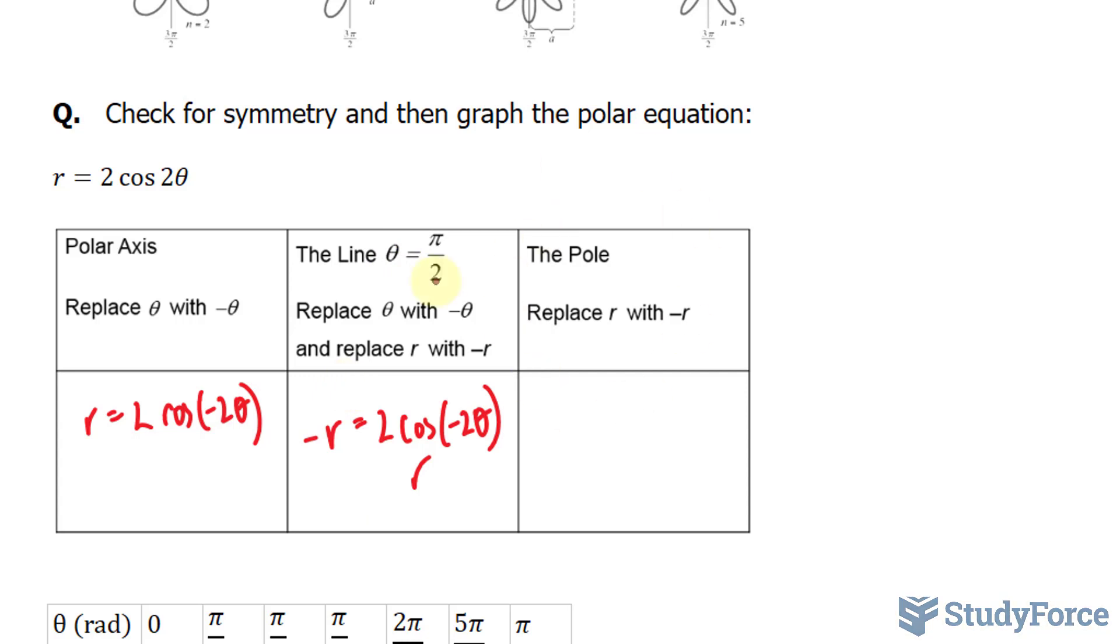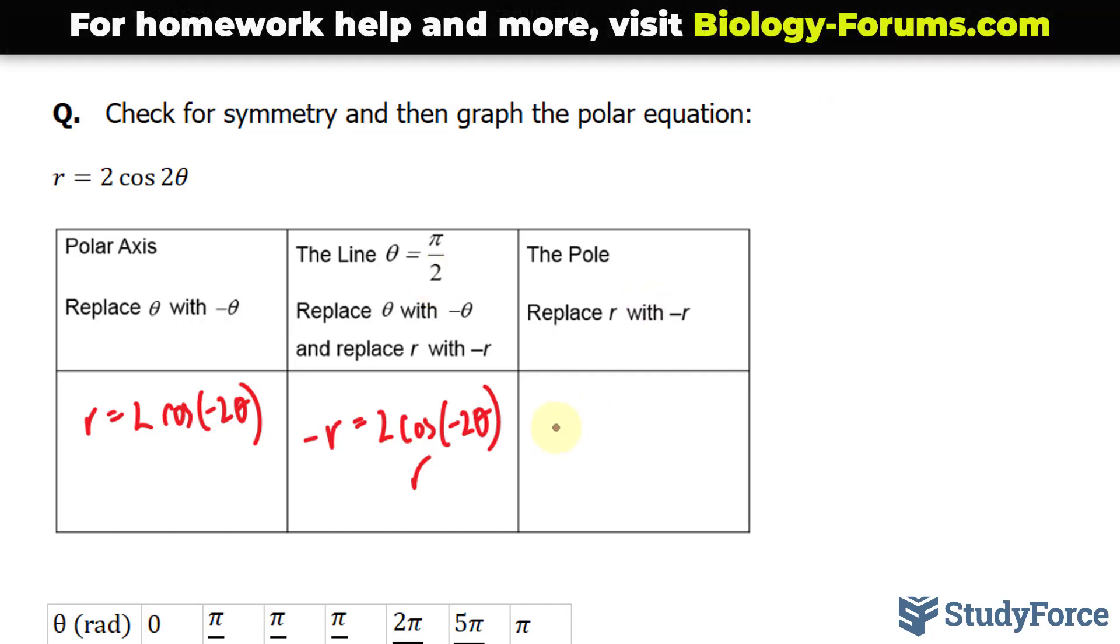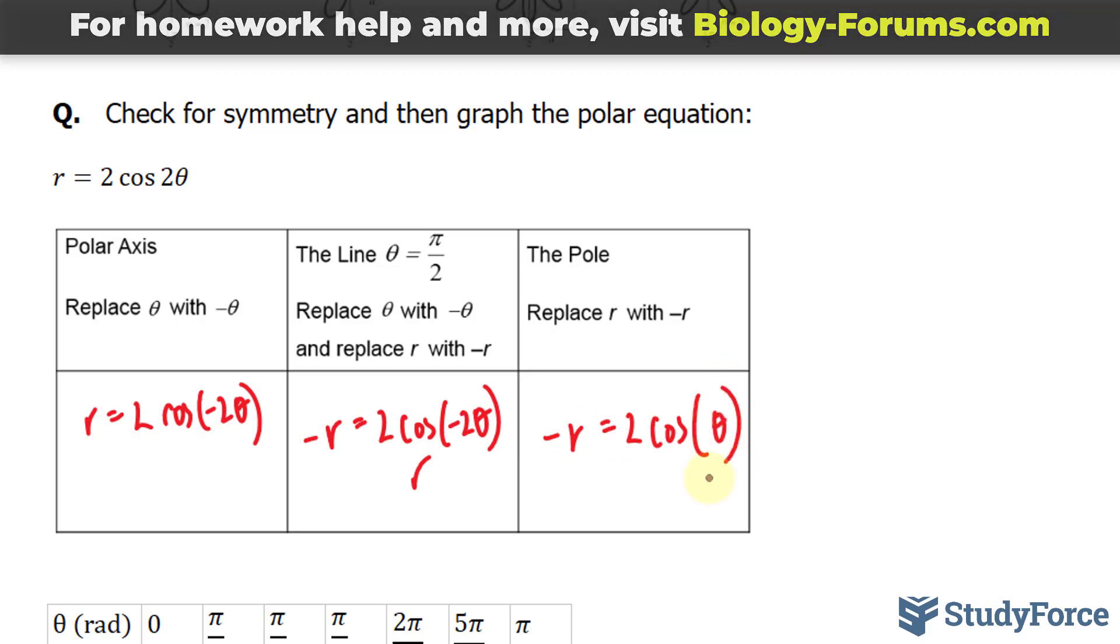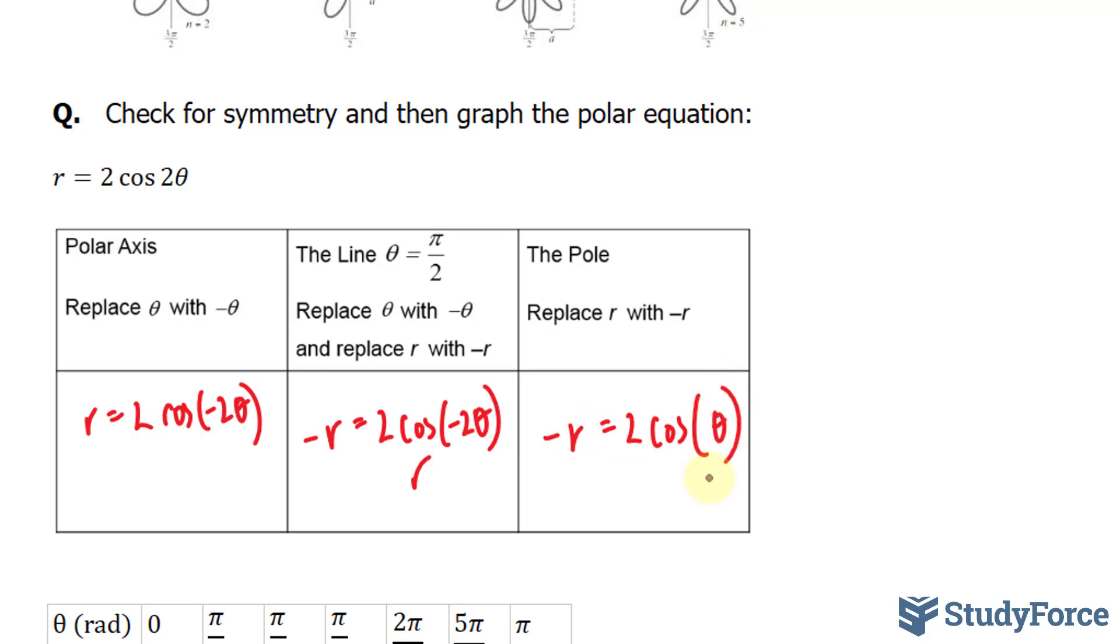Finally, to check for symmetry about the pole, we have to replace r with negative r. Negative r equals 2 cosine theta. Clearly, our equation changes from being positive r to negative r, so it's not symmetrical about the origin.